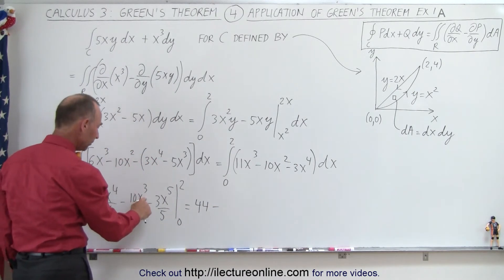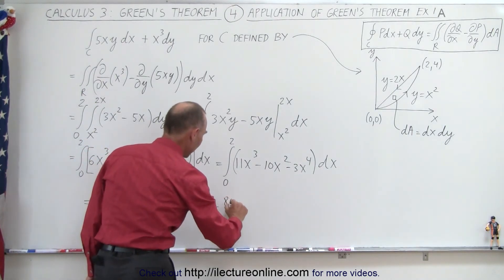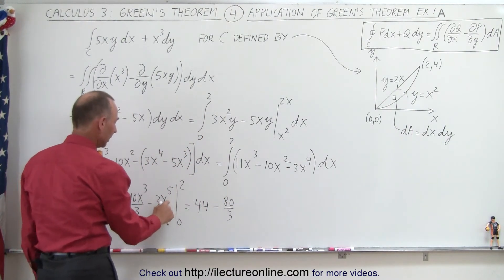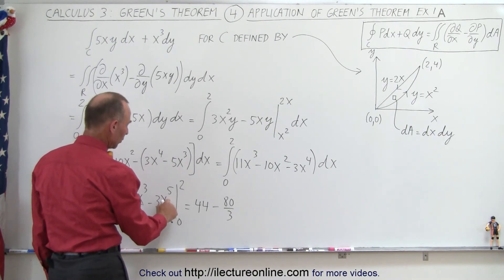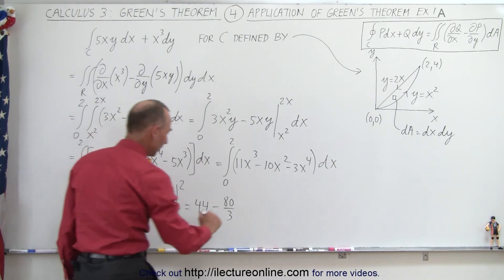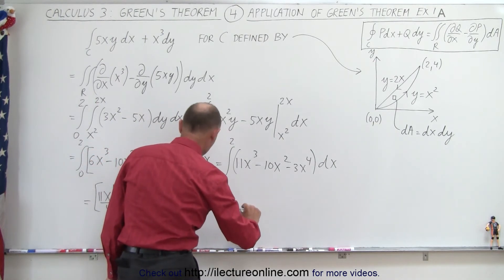Minus, plug in the upper limit, we get 8, that's 80 divided by 3, minus 80 divided by 3. And here we plug in, that would be x⁵, that's 2⁵ is 32, times 3 is 96, divided by 5. So that would be -96 divided by 5.